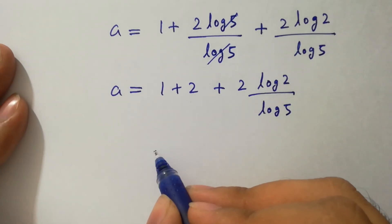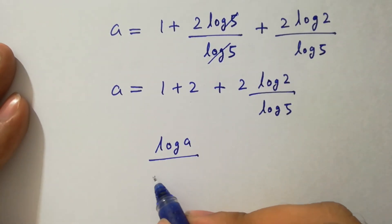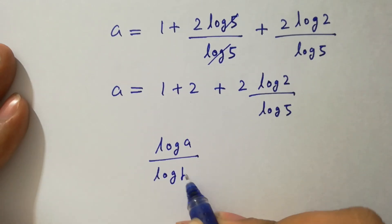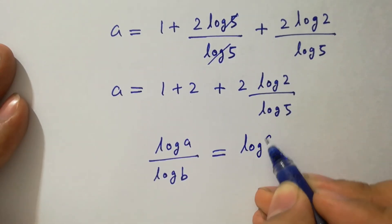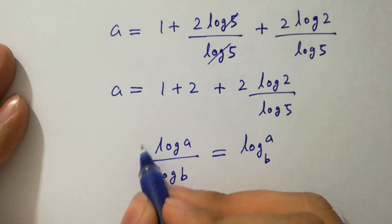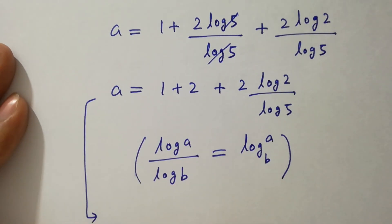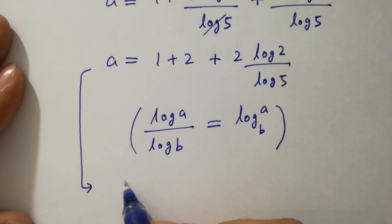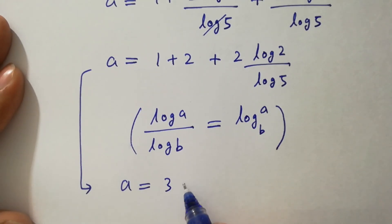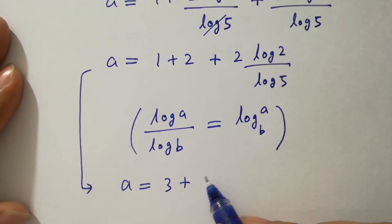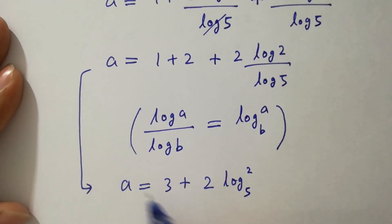As we know, log A over log B equals log A to the base B. So a will be equal to 2 plus 1 is 3, plus 2 log 2 to the base 5, which is our value of a.